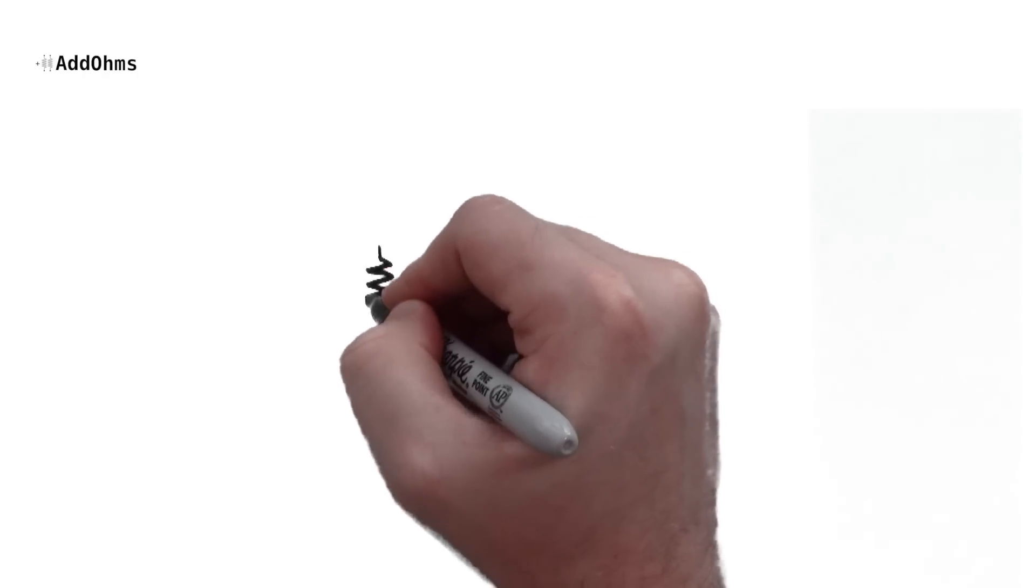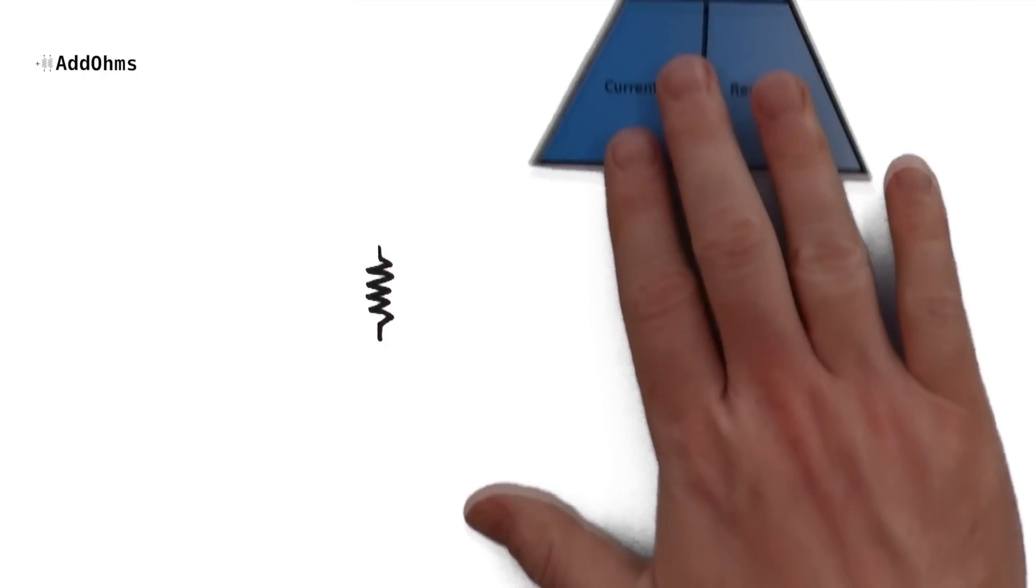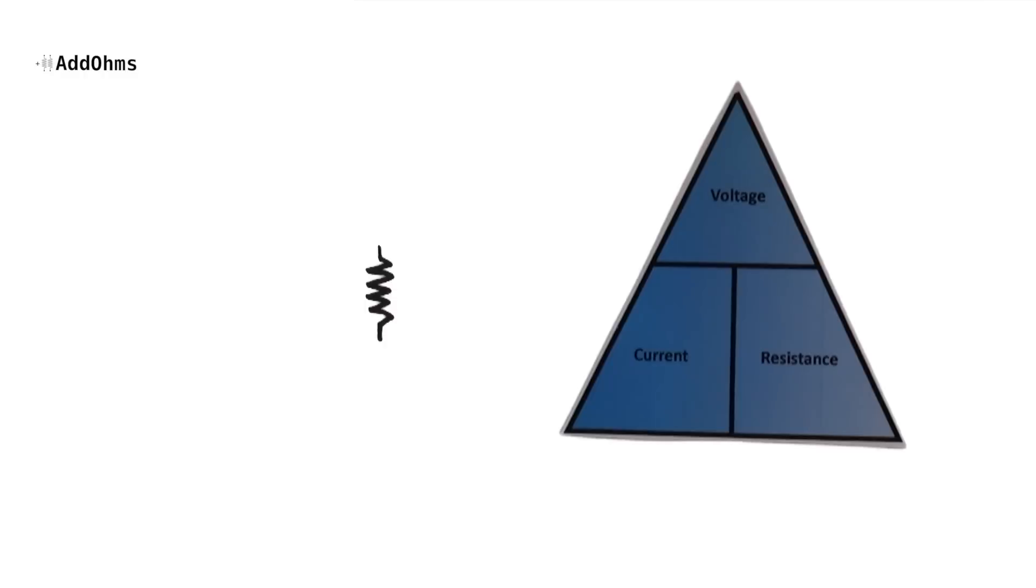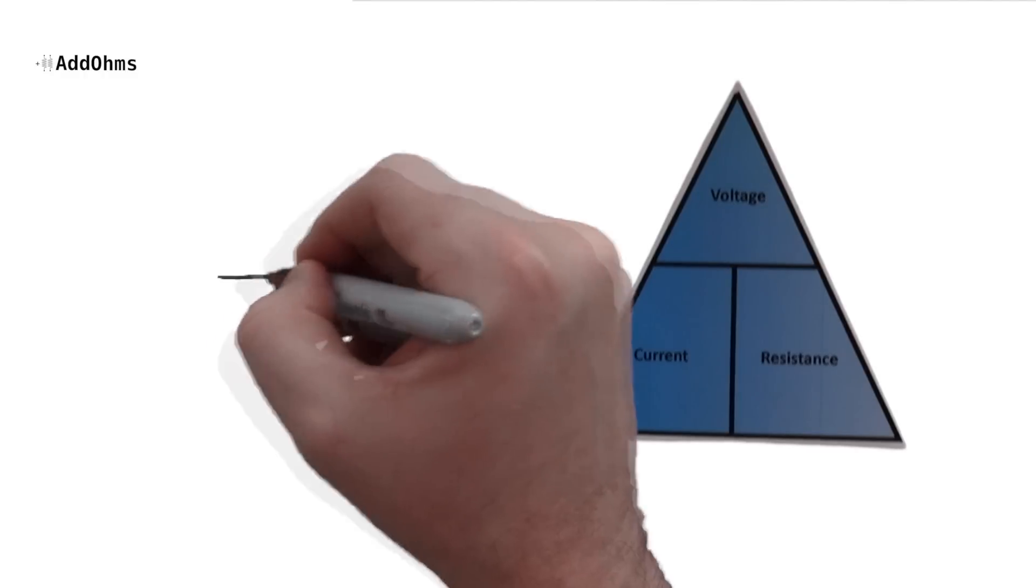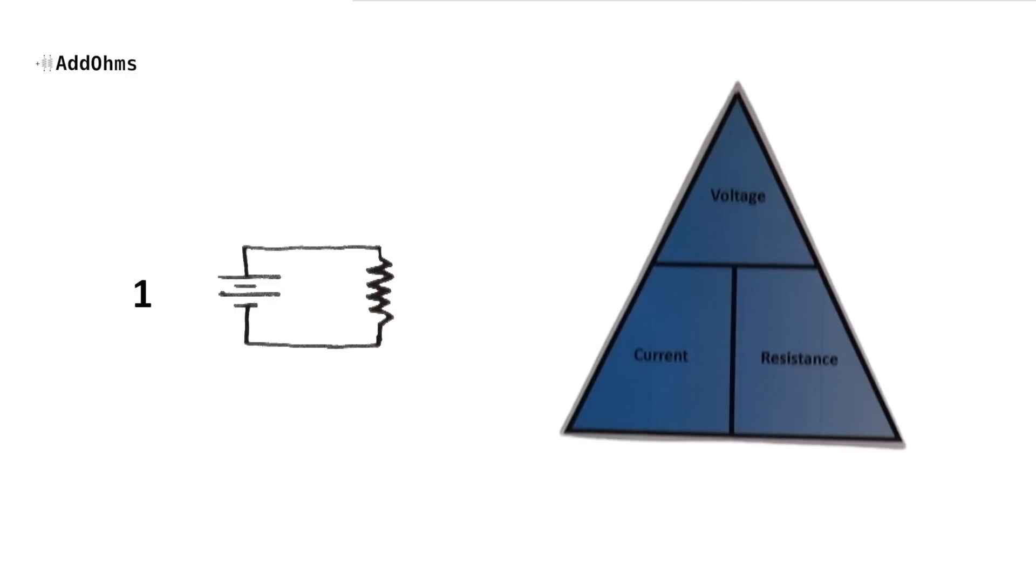When a voltage is applied to a resistor, a certain amount of current will flow through it. The amount is defined by Ohm's law, which is going to be covered in more detail with another video. For now, let's look at this example. If you put 10 volts across a 10 ohm resistor, 1 amp of current will flow.